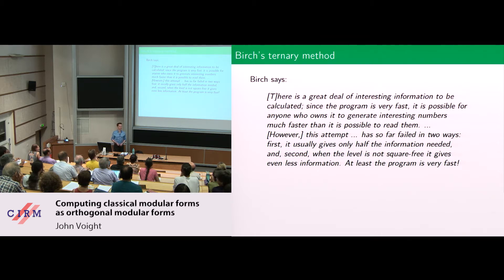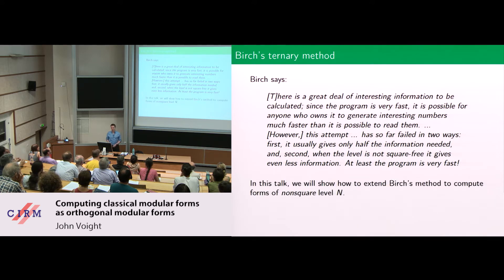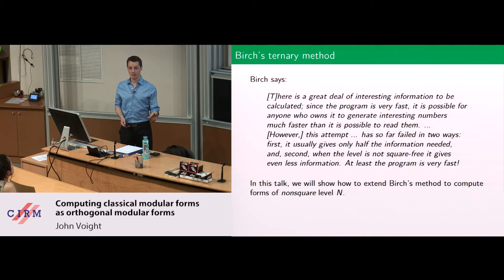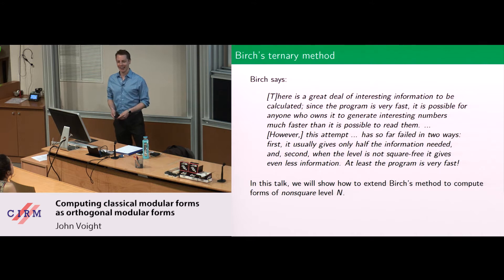'At least the program is very fast' — characteristic of Birch. So today what I'd like to explain to you is how to extend Birch's method to compute forms as long as the level N is not a square. That's pretty good — can't do them all, but it's still very fast.